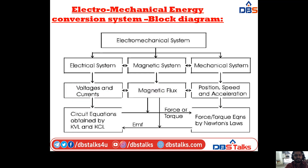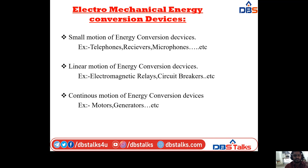Coming to electromechanical energy conversion devices — for small motion devices we use, for example, telephone receivers, microphones, etc. For linear motion energy conversion devices, examples are electromagnetic relays, circuit breakers, etc. For continuous motion energy conversion devices, examples are motors, generators, etc.